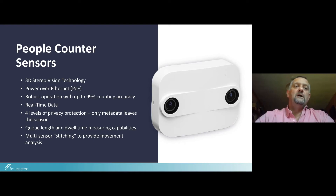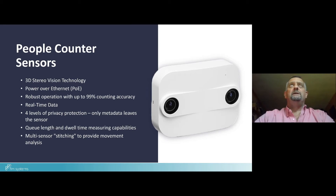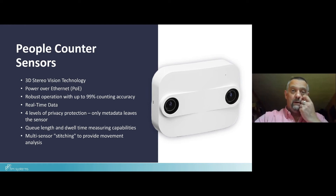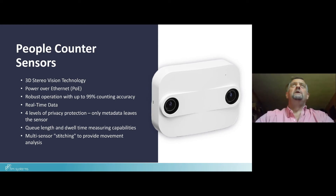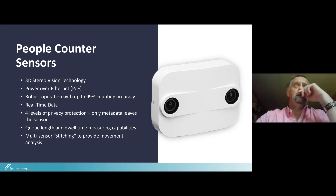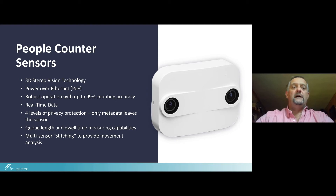These sensors are slightly different to the open area sensors and PIR sensors discussed earlier. They use 3D stereo vision technology — camera-based technology. Similar to the XY Sense sensor, privacy is of paramount importance; only metadata leaves the sensor, with no imagery leaving it. There are up to four levels of privacy protection built in. They are also intelligent enough to count bi-directionally, understanding a person walking in and walking out of a space.